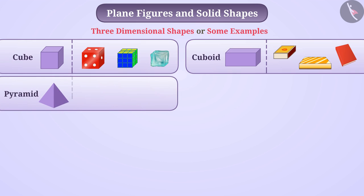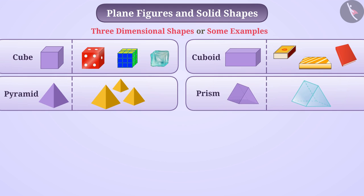This is a pyramid. In pictures, you must have seen the Egyptian pyramids. This is a prism. You must have seen this type of glass object. When rays of sun fall on this object, we see different colors. This is a prism.